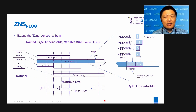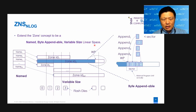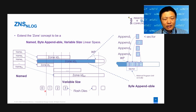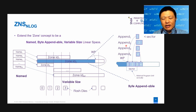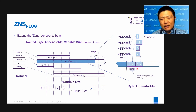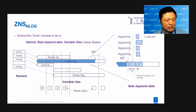Essentially, we extend the zone concept to be a named, byte-appendable, variable-size linear space. By named, we allow each zone to be named and map that name to a unique zone ID. Also, each zone can span multiple numbers of flash dies. For a small zone, like zone ID 3, it can only span two dies. For a large zone, like zone ID 2, it can span all the flash dies. For byte-level append, we have four appends each smaller than a sector. We can stage all appends in a buffer until the buffer contains enough data to fill a sector, at which point we flush the buffer onto actual NAND.